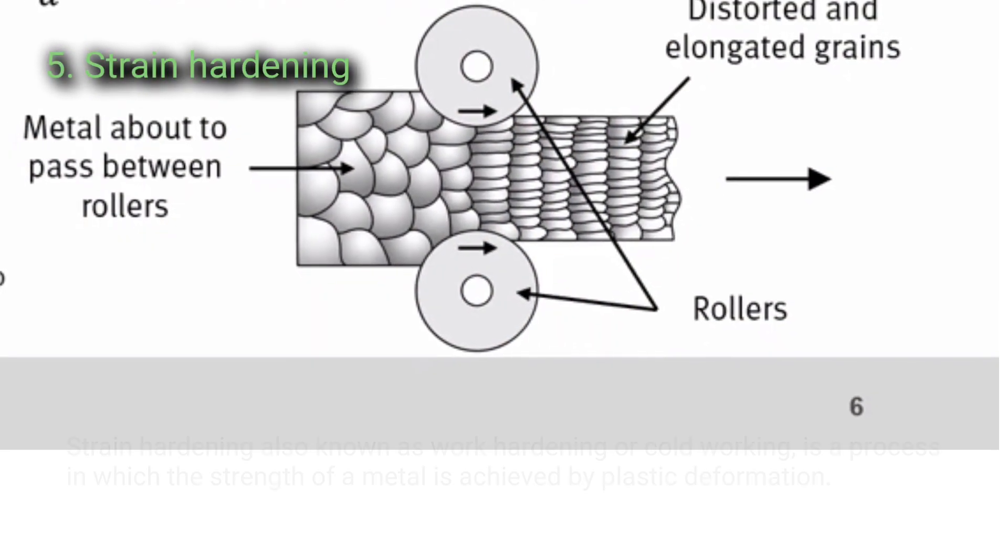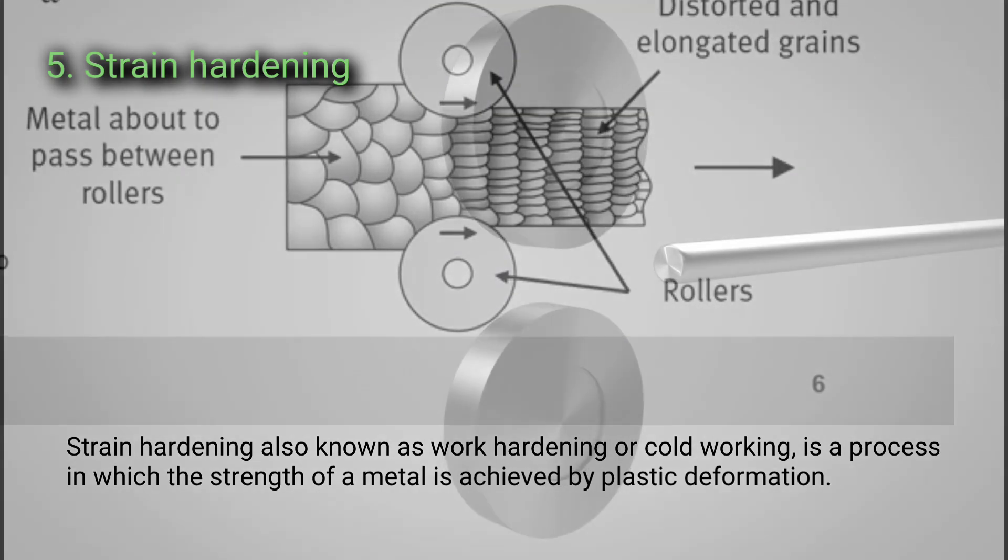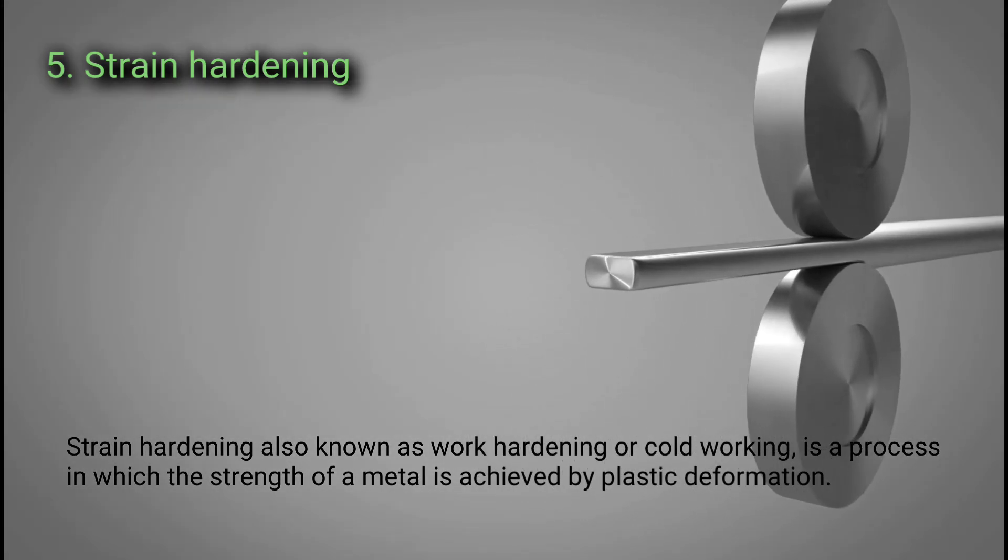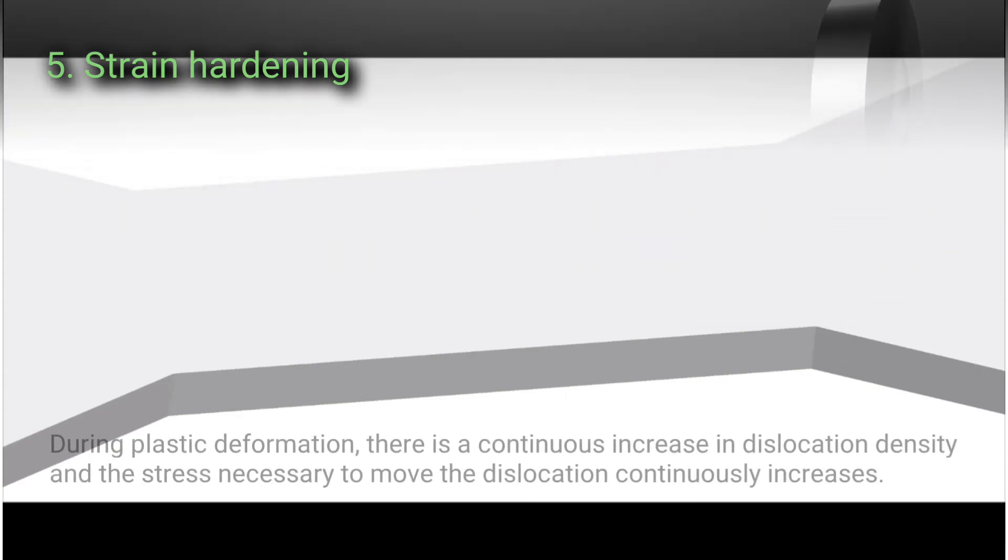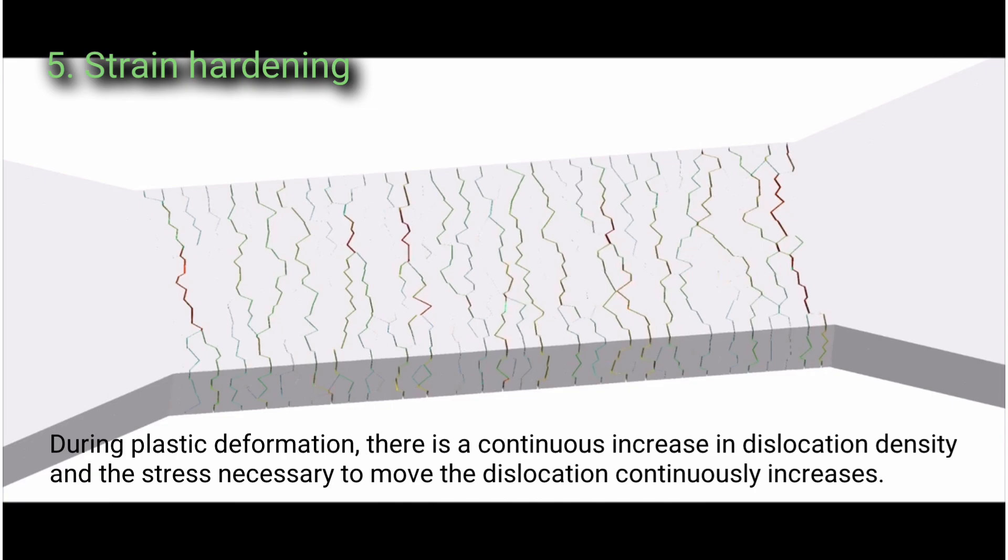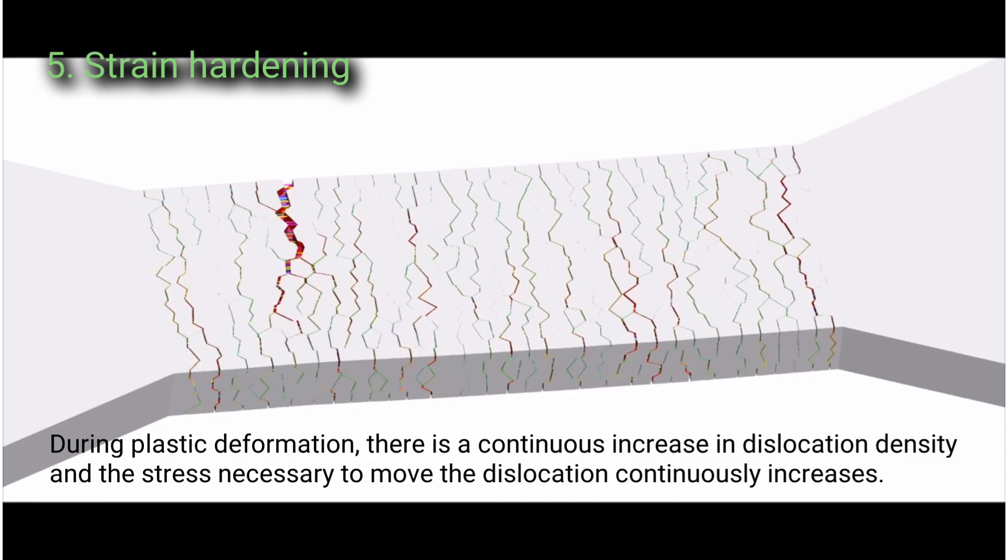Strain hardening: Strain hardening, also known as work hardening or cold working, is a process in which the strength of a metal is achieved by plastic deformation. During plastic deformation, there is a continuous increase in dislocation density, and the stress necessary to move the dislocation continuously increases.